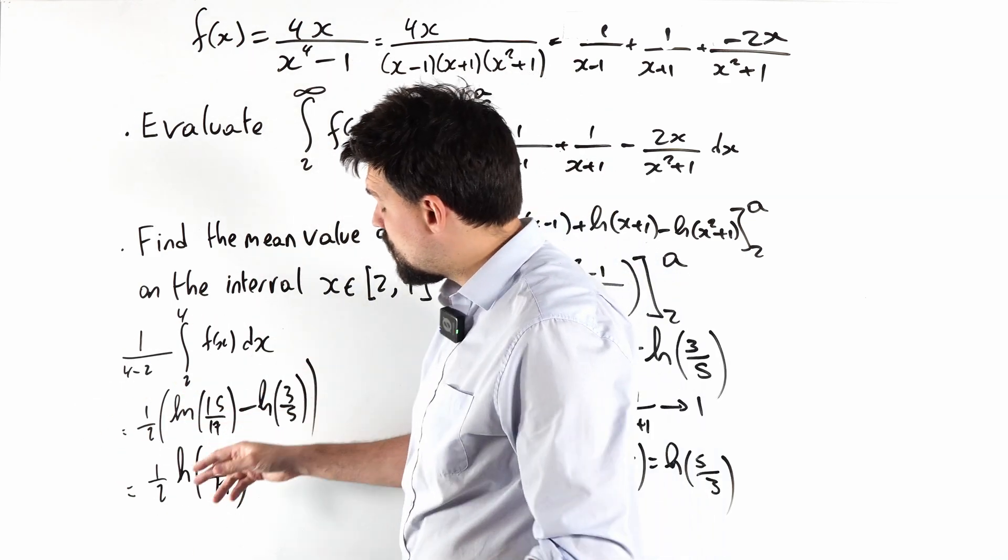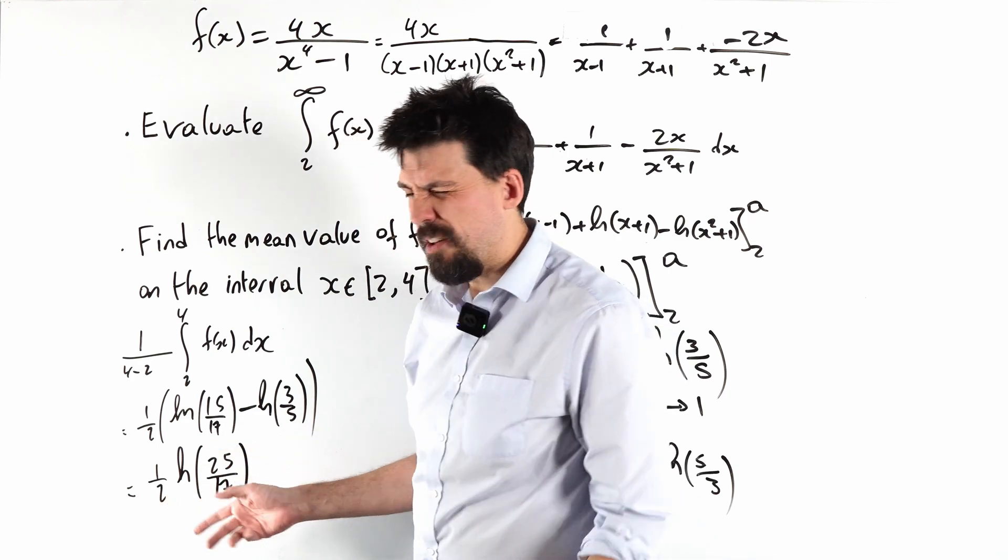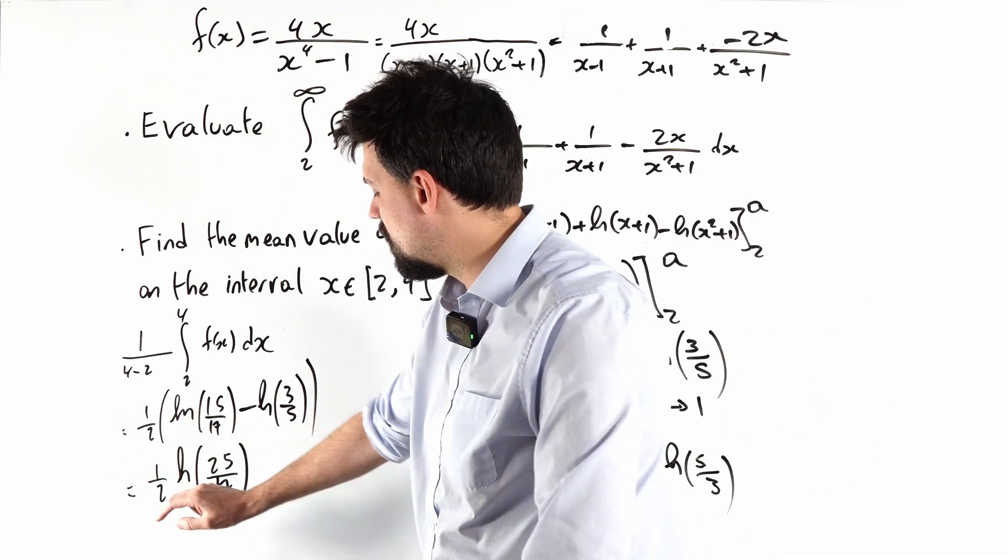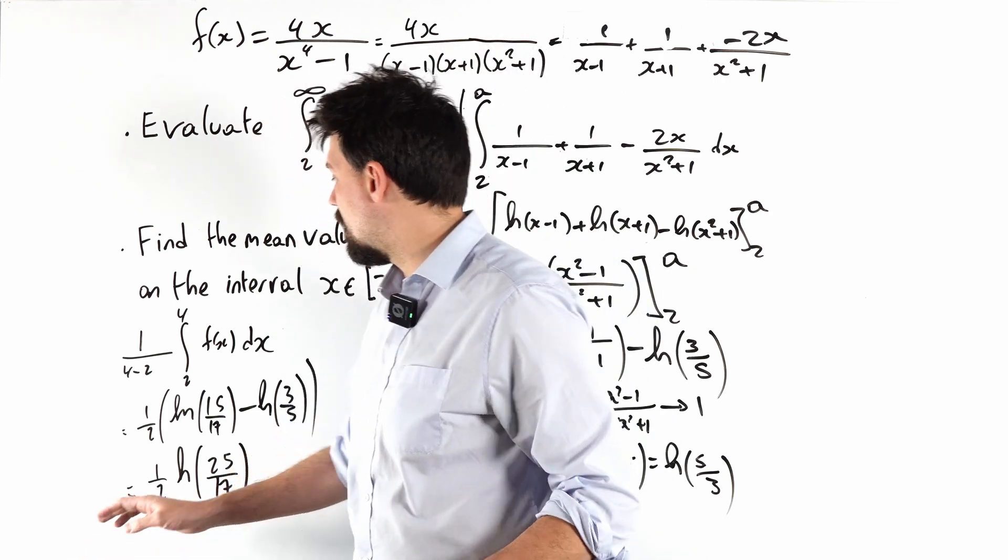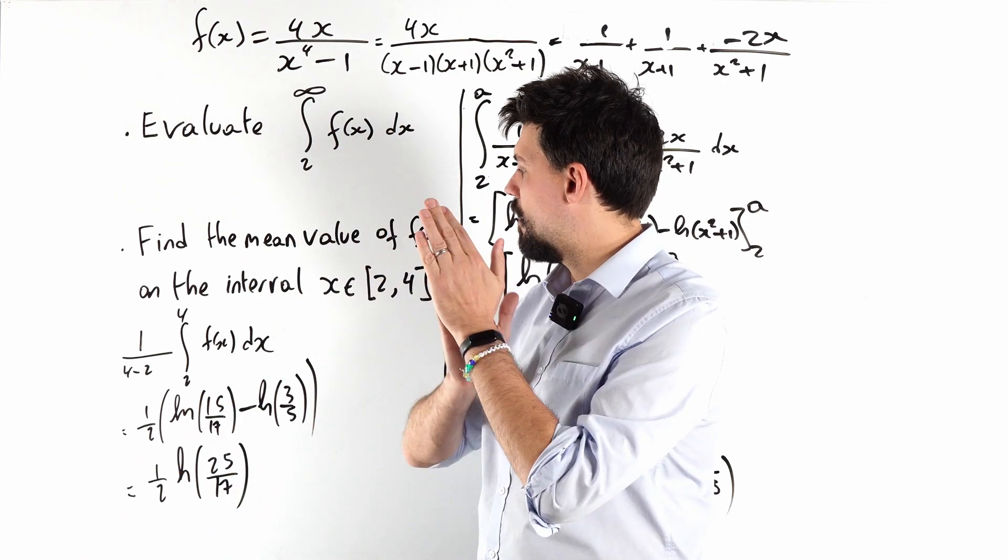Which is, if we tidy that up, divide those two, 3 and 15 cancel, that is 1 half ln of 25 over 17. Which is almost very, very nice, because that half could then be a square root on the 25, but it doesn't do anything nice with the 17. So I'm just going to leave it there. I don't think I'd gain anything by trying to actually muck about with that.